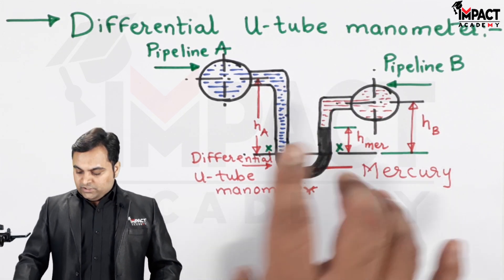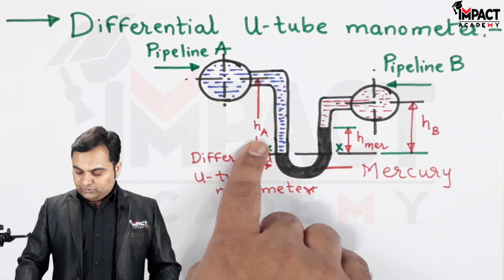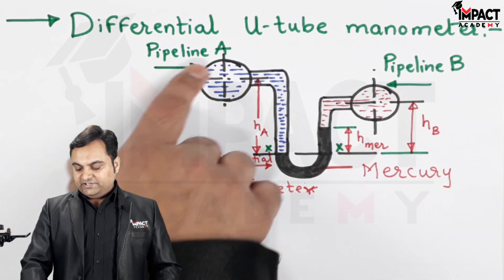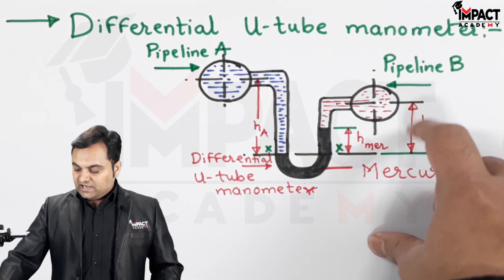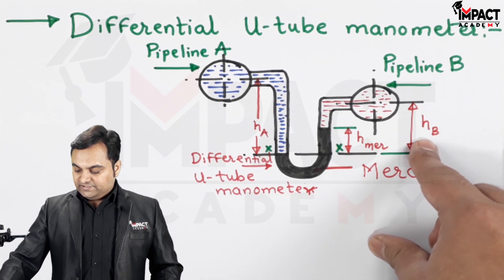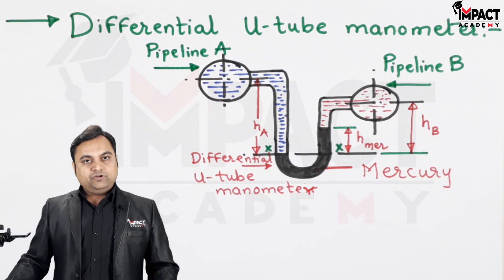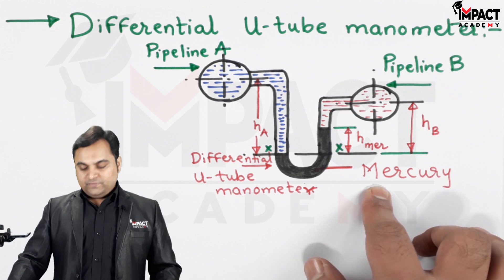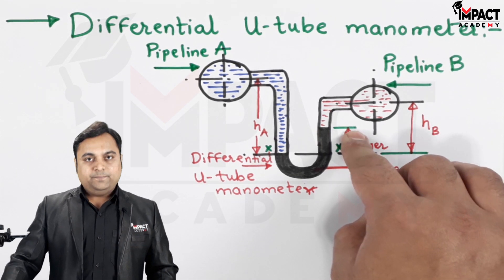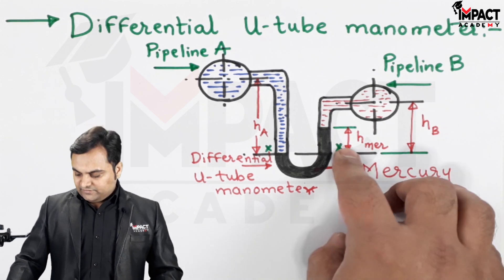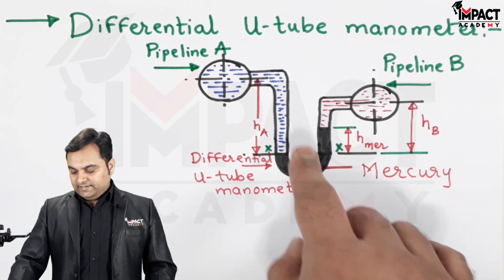The height of the liquid in the left limb is denoted as HA because the fluid is A, whereas on the right side the fluid is B, so its height up to the center of the pipe is HB. This is a differential U-tube mercury manometer which contains mercury, so the height of mercury is found in the right limb.